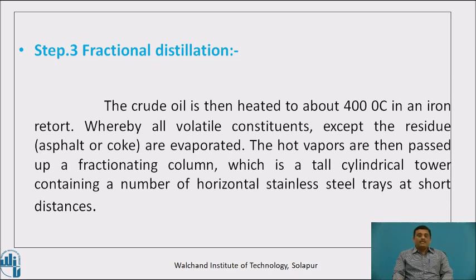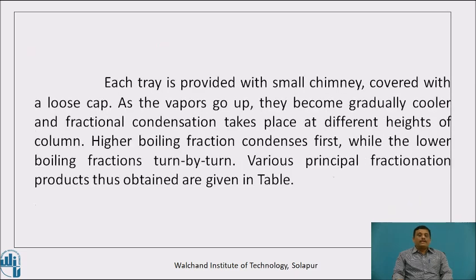The crude oil is heated to 400 degrees centigrade, where all volatile constituents except the residue are evaporated. The hot vapors are then passed through a fractionating column, and the different fractions are separated on the basis of their boiling points. Each tray is provided with a small opening covered with a loose cap. As the vapors go up, they become gradually cooled and fractional condensation takes place at different heights of the column. Higher boiling fractions condense first, while the lower boiling fractions condense in turn at higher levels.